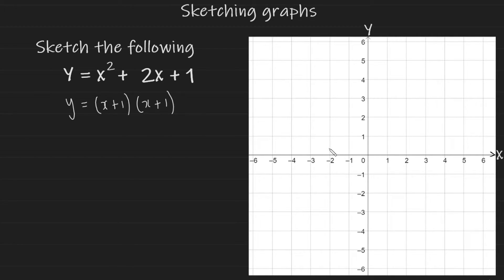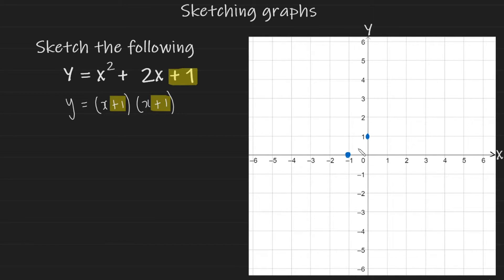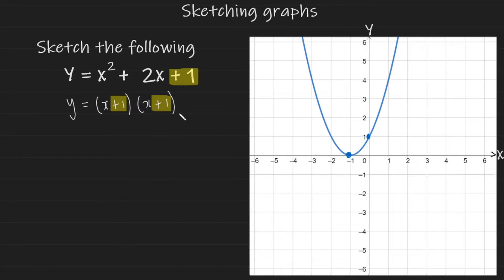So what does this mean when it comes to sketching the graph? We have a y-intercept of +1 and a repeated root. The repeated root only takes one specific point, and remember: if your roots inside the brackets are +1, they are plotted as negative 1 on the graph. So the graph comes down from this region and goes back up, giving us a positive quadratic with a repeated root.